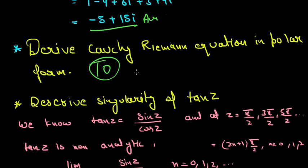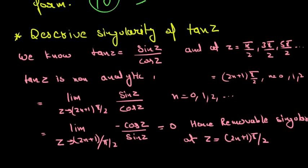A singularity question was to find the singularities of tan z. We know that tan z is sin z upon cos z, and cos z is 0 when z is equal to (2n+1)π/2, which is z equal to π/2, 3π/2, 5π/2, and so on.